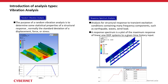Response spectrum analysis is used for structural response to transient excitation conditions containing many frequency components — such as earthquakes, waves, or wind loads. The maximum response of each frequency in a linear single-degree-of-freedom system given the time history input is extracted and plotted as input in ANSYS Mechanical, from which we evaluate structural responses in terms of displacement, force, and stresses.